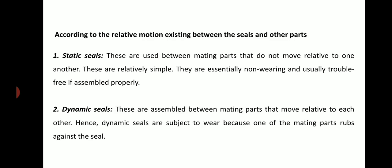According to the relative motion existing between the seals and other parts: Static seals — these are used between mating parts that do not move relative to one another. These are relatively simple; they are essentially non-wearing and usually trouble-free if assembled properly. Dynamic seals — these are assembled between mating parts that move relative to each other. Hence, dynamic seals are subject to wear because one of the mating parts rubs against the seal.